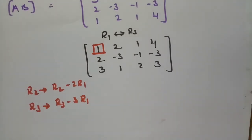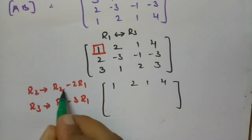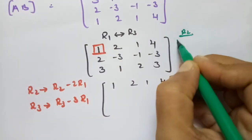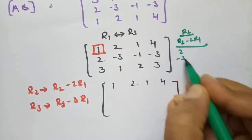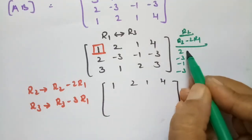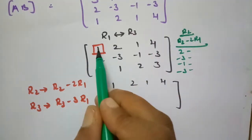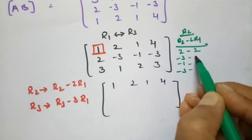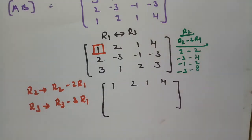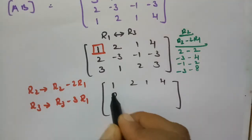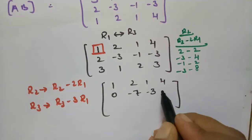Row 1 remains as is: 1, 2, 1, 4. For row 2, the operation is R2 minus 2·R1. Row 2 is 2, minus 3, minus 1, minus 3, and we subtract 2 times row 1 (which is 2, 4, 2, 8). This gives: 2 minus 2 = 0, minus 3 minus 4 = minus 7, minus 1 minus 2 = minus 3, and minus 3 minus 8 = minus 11.